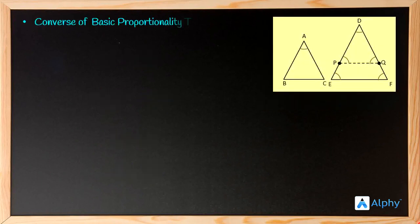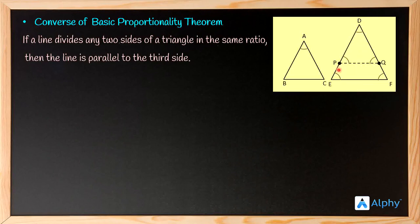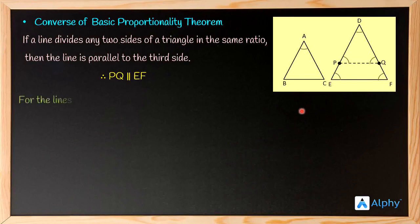The converse of the Basic Proportionality Theorem states that if a line divides any two sides of a triangle in the same ratio, then the line is parallel to the third side. Since DP/PE equals DQ/QF, sides DE and DF are divided in the same ratio by line PQ. Therefore, by the converse of BPT, PQ is parallel to EF.